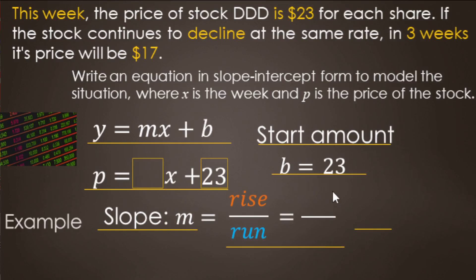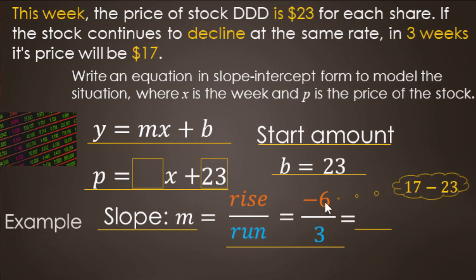To find the rise: you're starting at $23 and ending at $17, so subtract the two numbers — that's down $6, and it's negative because it's declining. Then what's the run? It took three weeks. So we have negative six over three. Negative divided by positive is negative, and six divided by three makes negative two. There's our equation: P equals negative two x plus 23. Summary: the price is going down $2 per week, x is weeks, starting at $23.